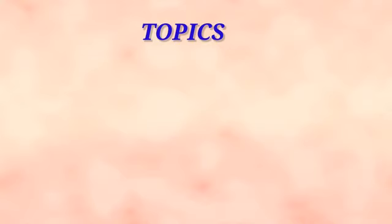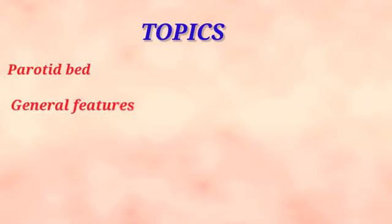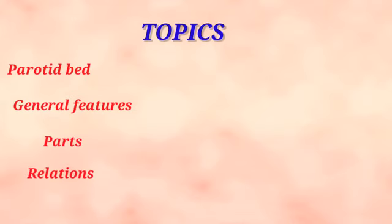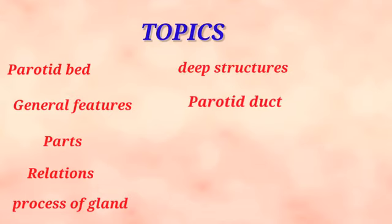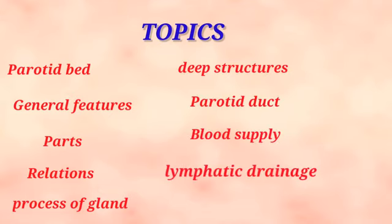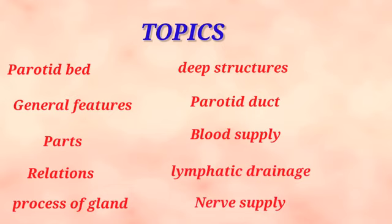Till now we were discussing the parotid gland under the following topics: the parotid bed, the general features of the parotid gland, its presenting parts and the relations of the various parts, the processes of the gland, the structures passing deep to the gland, the parotid duct, the blood supply, lymphatic drainage, and the nerve supply of the gland. Now we will see the surgical anatomy of the parotid gland.